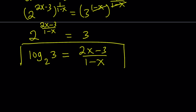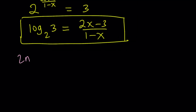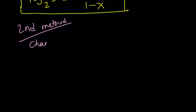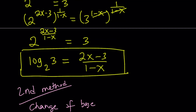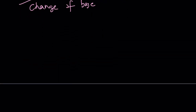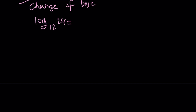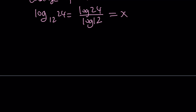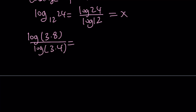Our goal was to find this in terms of x, and we did. So let's go ahead and talk about the second method. The second method involves change of base. We can write the original expression as log 24 over log 12, and we know that equals x. Now let's factor 24 and 12, with the goal of separating prime powers. So I'll go with 3 times 8 and 3 times 4. Using properties of logs, we can write this as log 3 plus log 8 divided by log 3 plus log 4 equals x.